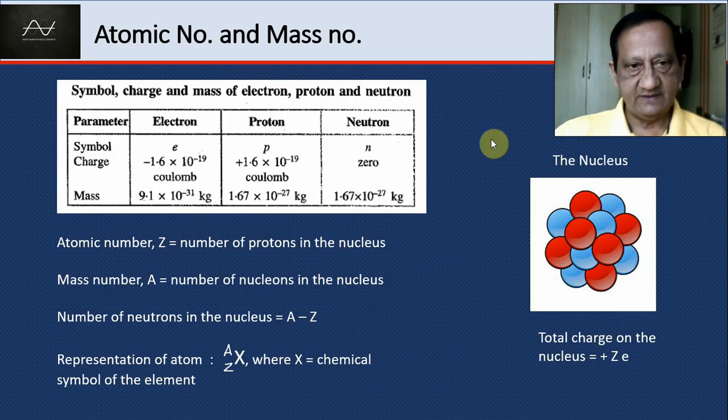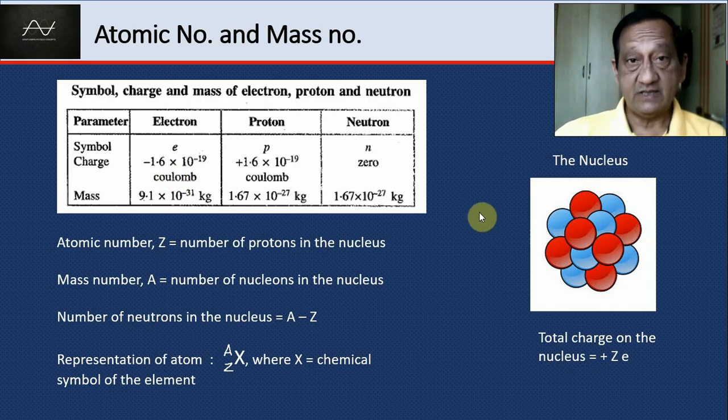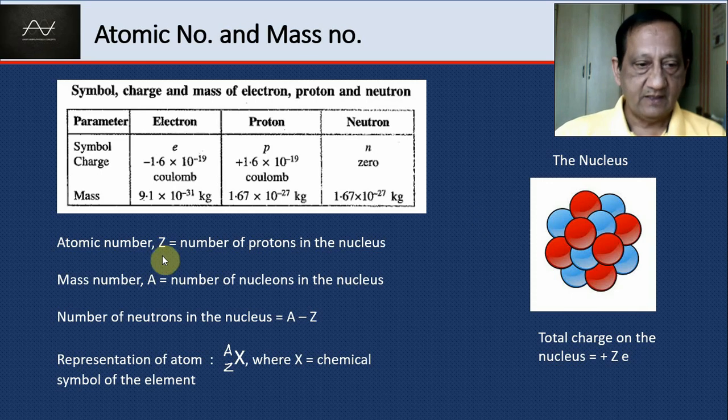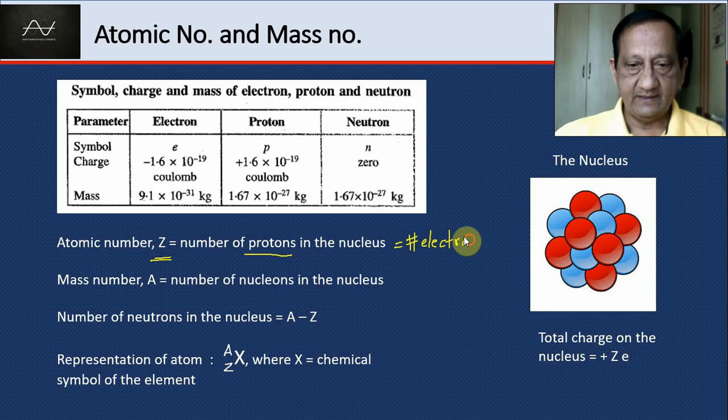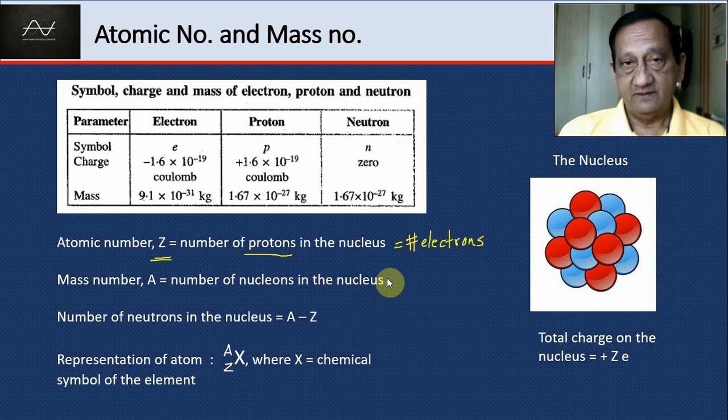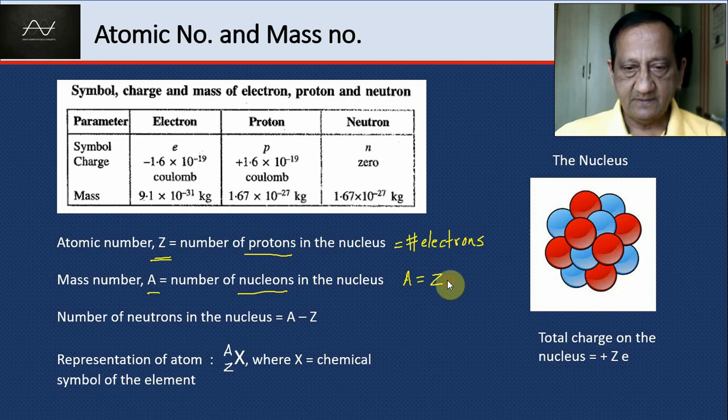Atomic number and mass number: We have electron, proton, and neutron with symbols E, P, and N. Atomic number Z is the number of protons in the nucleus and therefore equals the number of electrons outside. Chemical properties are determined by Z—that's the logic behind the periodic table. Mass number A is the number of nucleons, meaning A equals the number of protons plus neutrons. So the number of neutrons N is A minus Z.